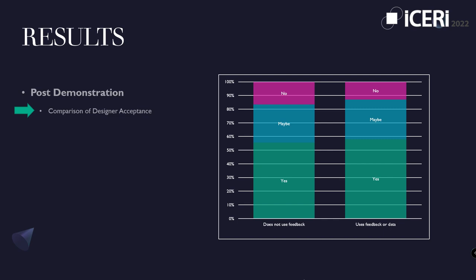Prior to the demonstration of the software, designers were asked if they currently evaluated their courses, resulting in a 37% no and 63% yes split. Subsequent to the MooLog demonstration, all participants were asked if they would adopt the software as part of normal activities. The chart identifies that both the yes and no groups had comparable levels of acceptance of the software as part of normal design and evaluation activities.